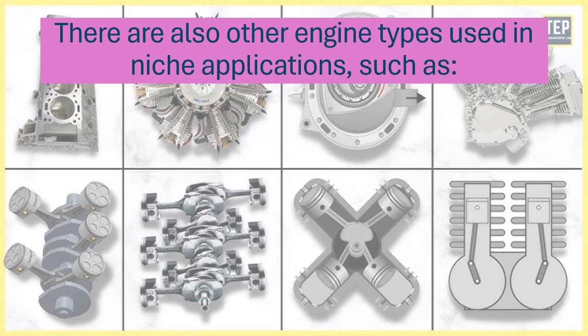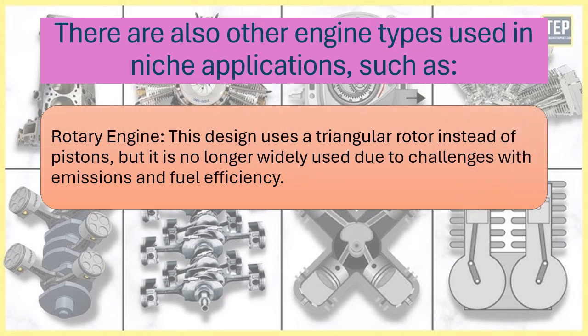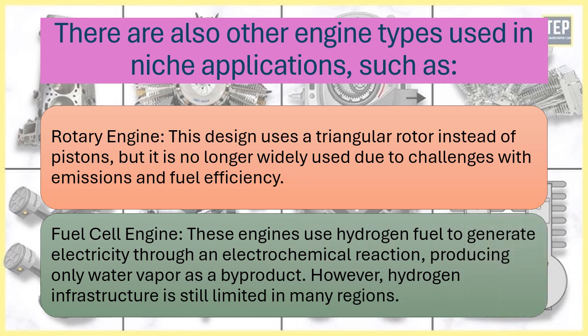There are also other engine types used in niche applications, such as the rotary engine — this design uses a triangular rotor instead of pistons, but it is no longer widely used due to challenges with emissions and fuel efficiency. Fuel cell engines use hydrogen fuel to generate electricity through an electrochemical reaction, producing only water vapor as a by-product.